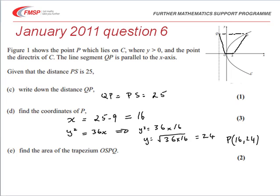I'm told it's a trapezium, so the area of OSPQ is equal to one-half the sum of the parallel sides, so that's OS plus QP, and then multiplied by h, the height, the distance between them.